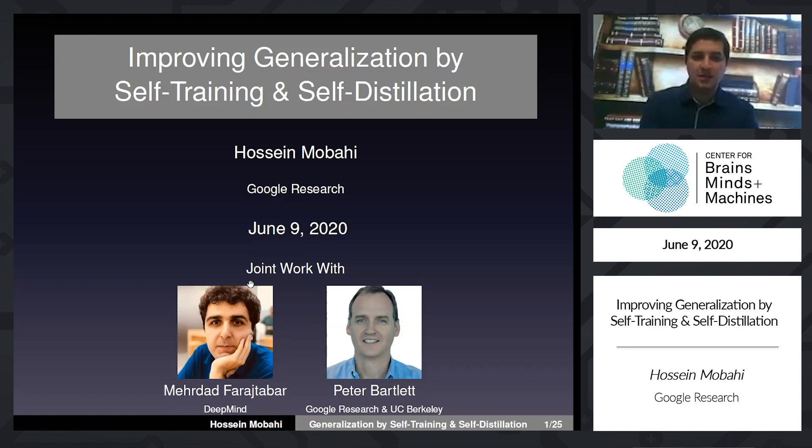Today I'll be talking about self-training and self-distillation and why they can improve generalization. This is joint work with my collaborators, Mehdad Farsh Sabar from DeepMind and Peter Bartlett from Google Research and also UC Berkeley.